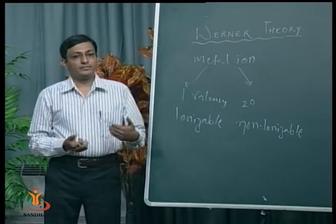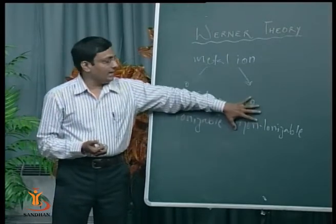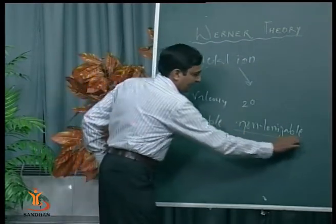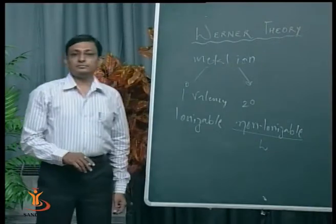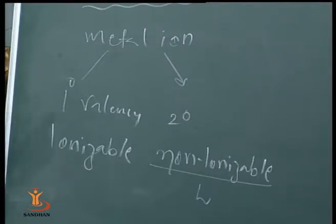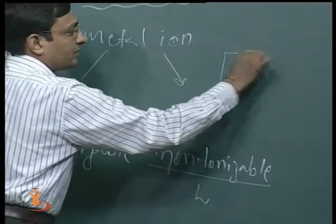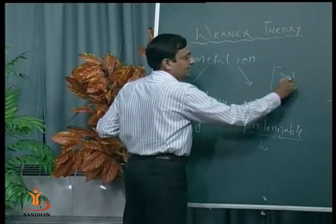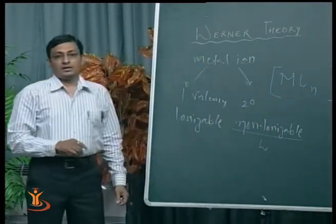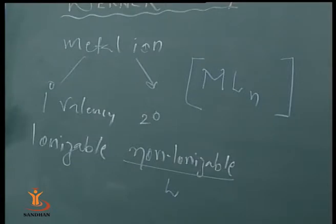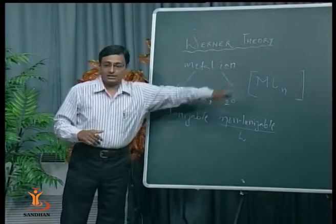According to Werner, those atoms or molecules which link with a metal ion by a coordinate covalent bond are called ligands. The metal ion and ligands are written inside the bracket as ML_n. Those atoms or molecules which link with a metal ion by primary valency — by ionic bond — are written outside the bracket. If it is a cation, we write it in the prefix; if it is an anion, we write it in a suffix.